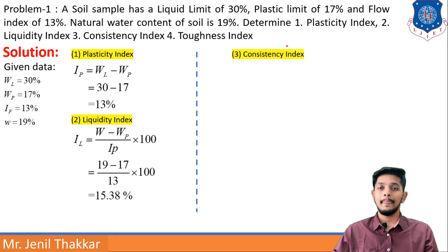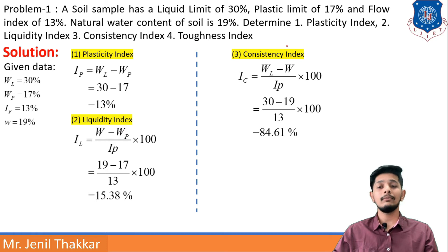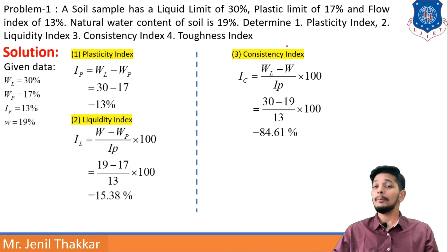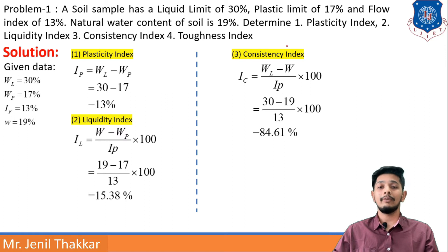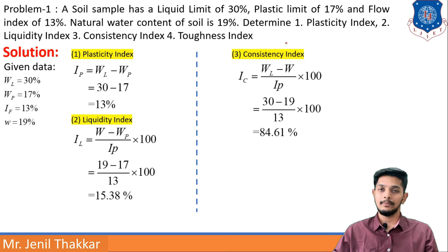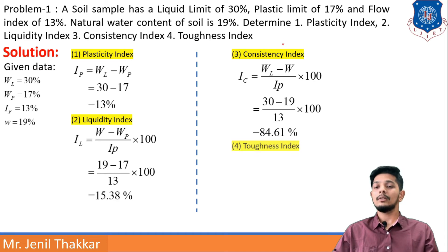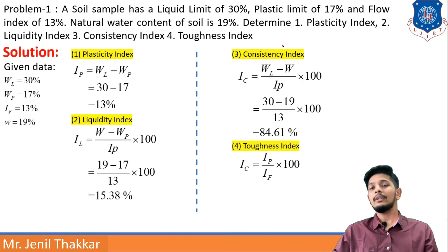Third item: consistency index. IC = (WL − W) / IP × 100. Putting in values WL = 30, W = 19, and IP = 13, the consistency index IC comes out as 84.61%.